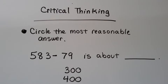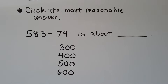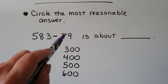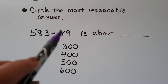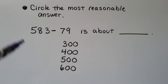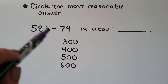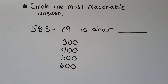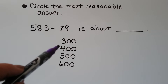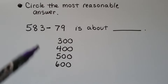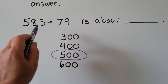We have 583 and we're taking away 79. Notice that 79 is really close to 83 — only a few apart. So if we took away that 83 we'd still be left with 500. Taking away 79 would be really close to 500. It wouldn't be close to 300 — that's too little — and it can't be close to 600 because that's bigger. So 583 minus 79 is about 500.